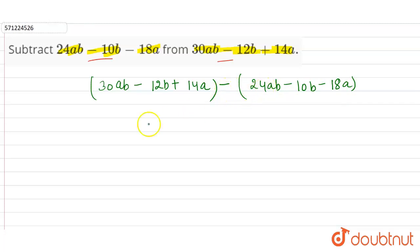So 30ab minus 12b plus 14a. Now plus minus plus is minus, so minus 24ab.